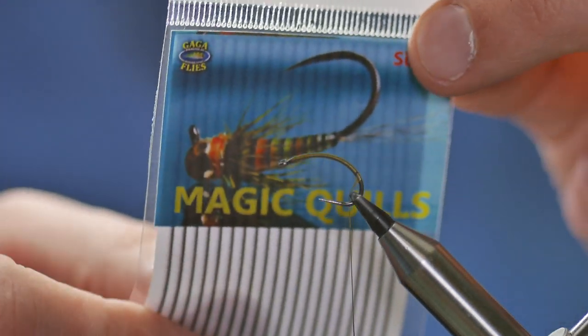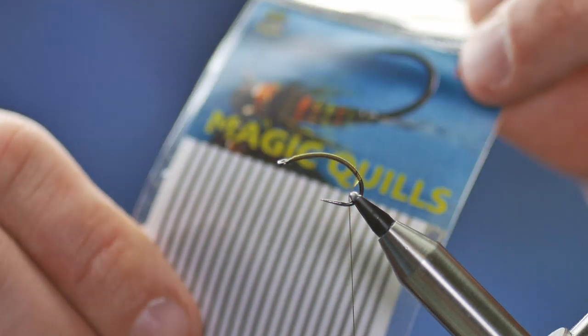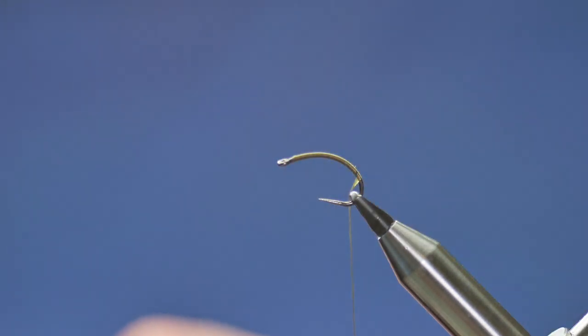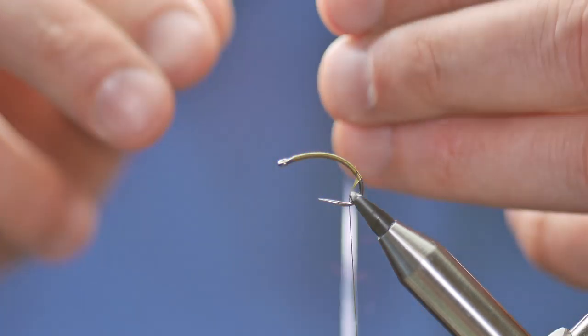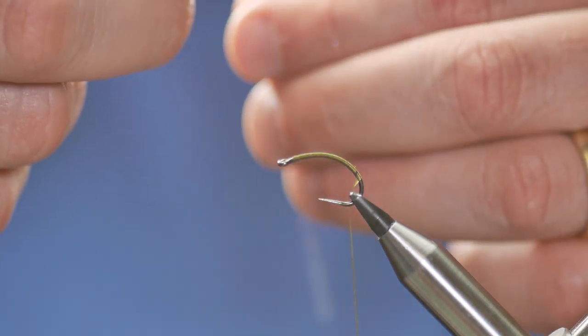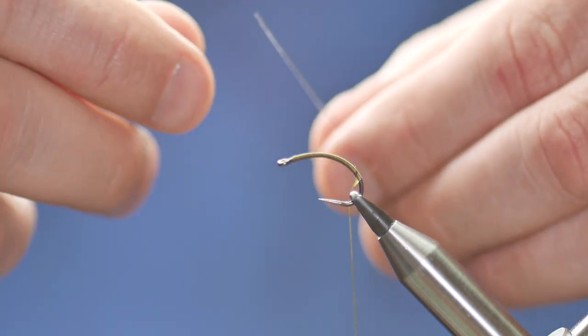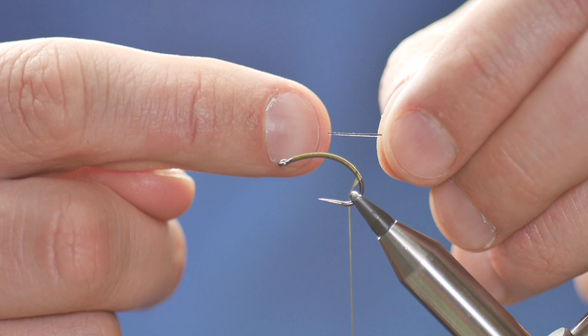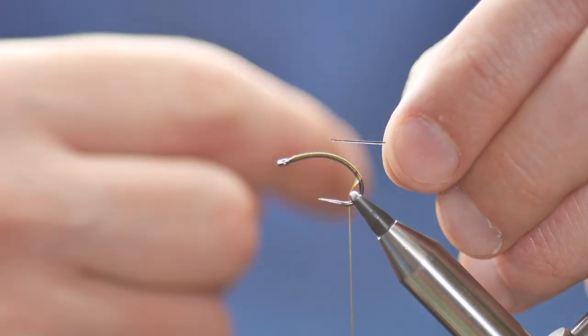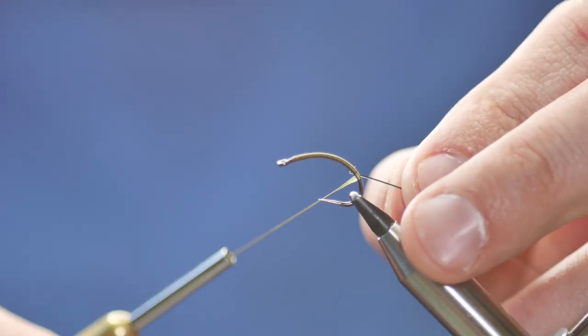I've tied up a couple with peacock herl and I like them too, but I'm using magic quills today because that's what I used for the one in the photograph. The magic quill is slightly adhesive on one side, and I've got that adhesive side towards me as I catch it in.